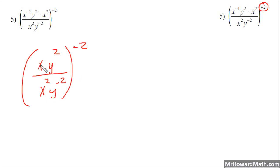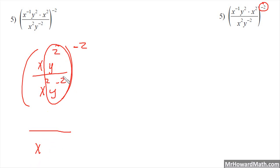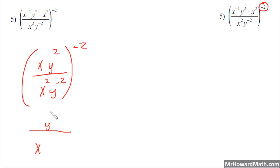Now I'll combine the x's. I have x to the first on top and x squared on bottom, so the bottom wins the x by 1 — that's just x. For the y's, I have y squared on top and y to the negative 2 on the bottom. Using our shortcut, we look at the exponents: 2 on top and negative 2 on bottom means the top wins by 4, so it's y to the 4th on top. We still need to bring in that negative 2 exponent.